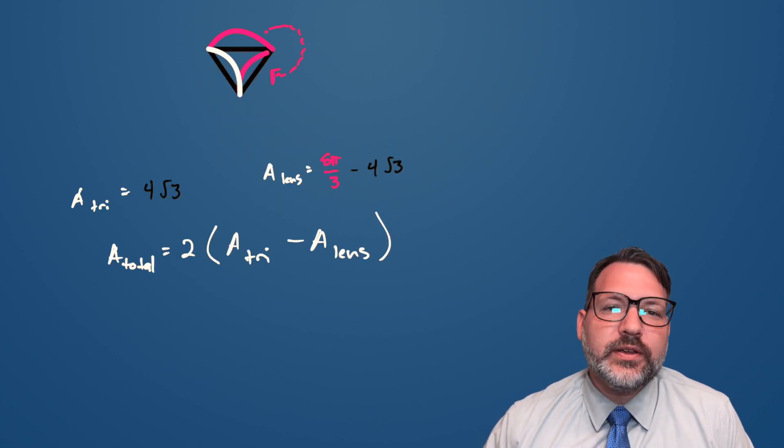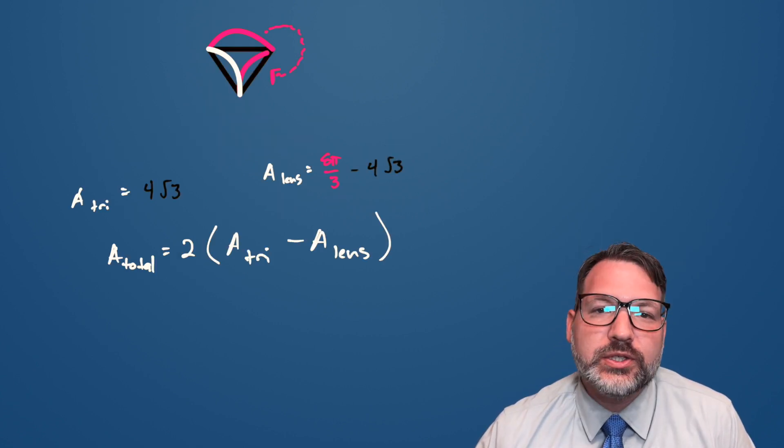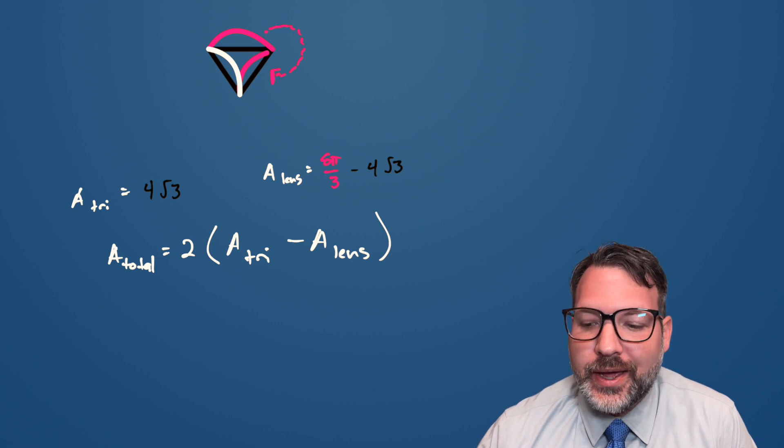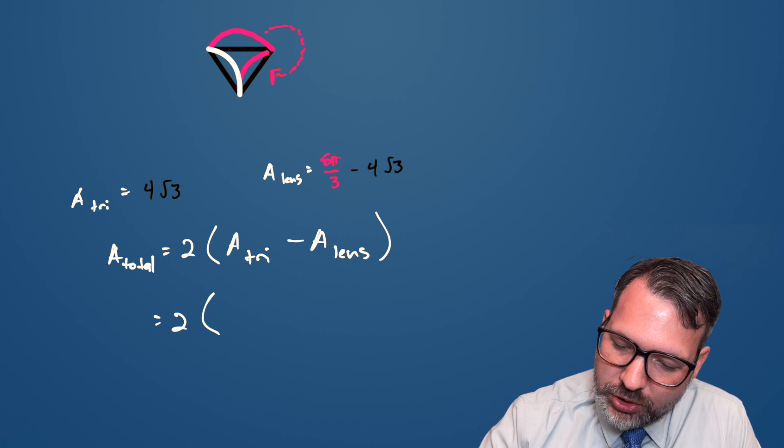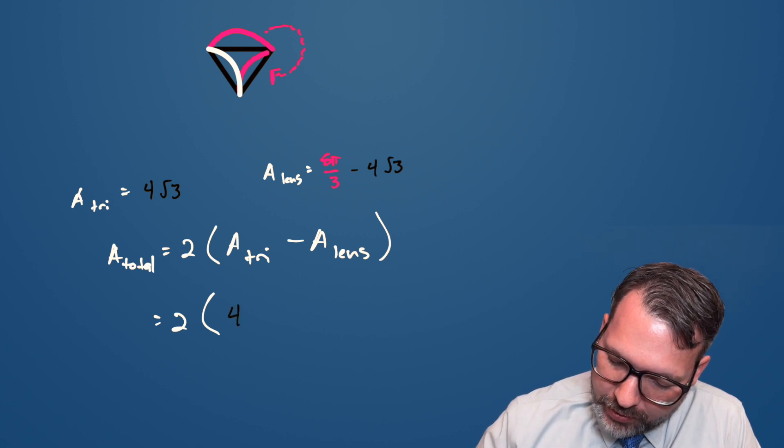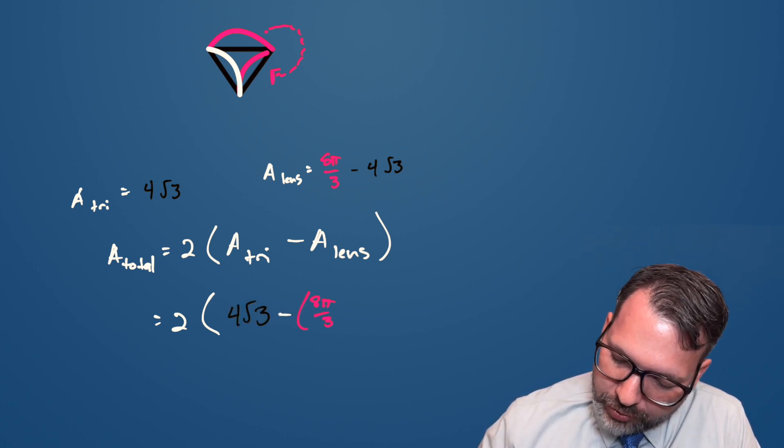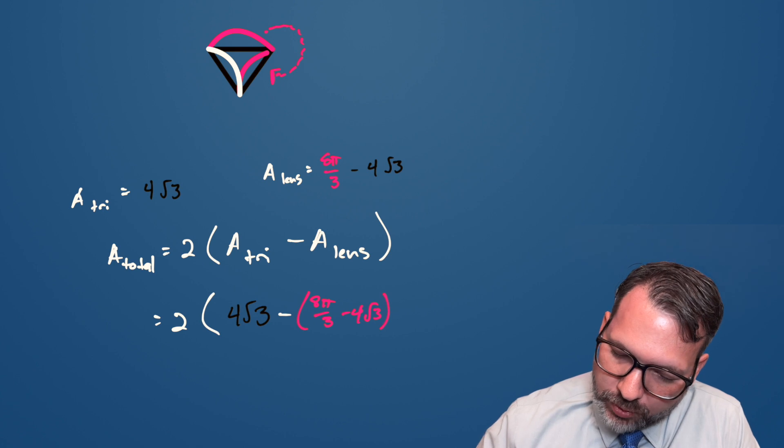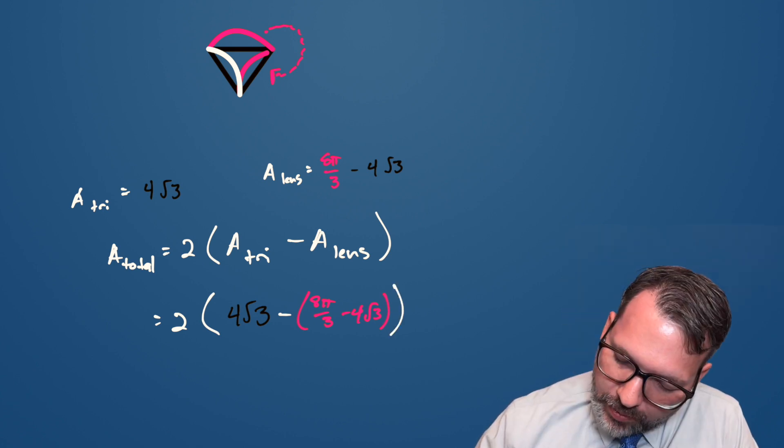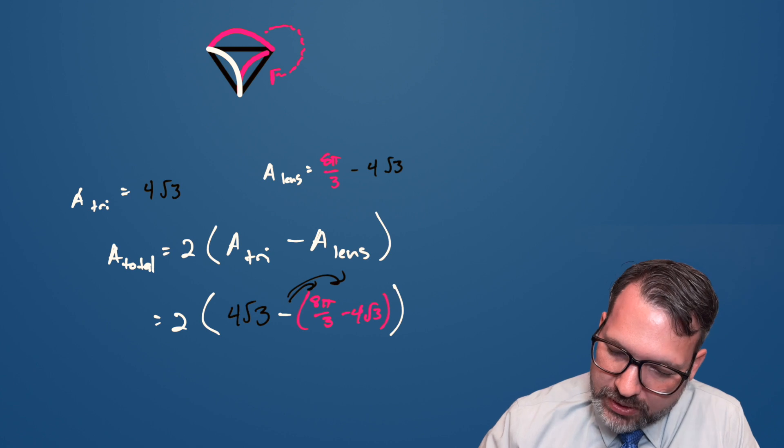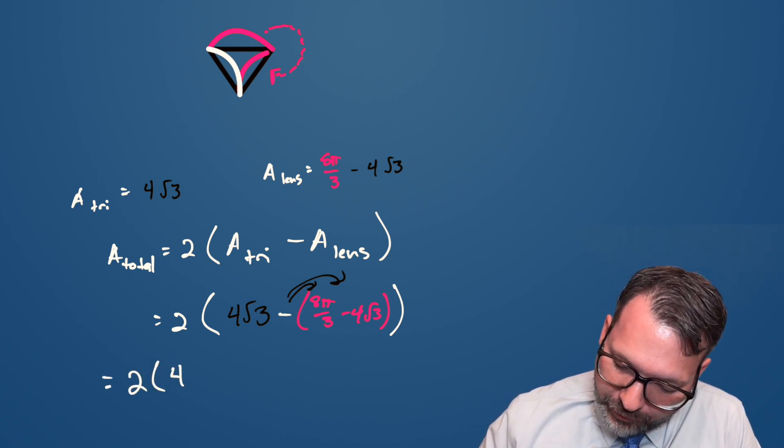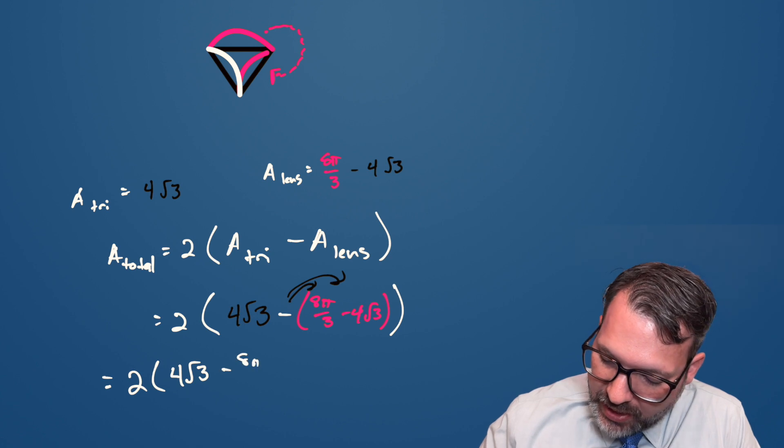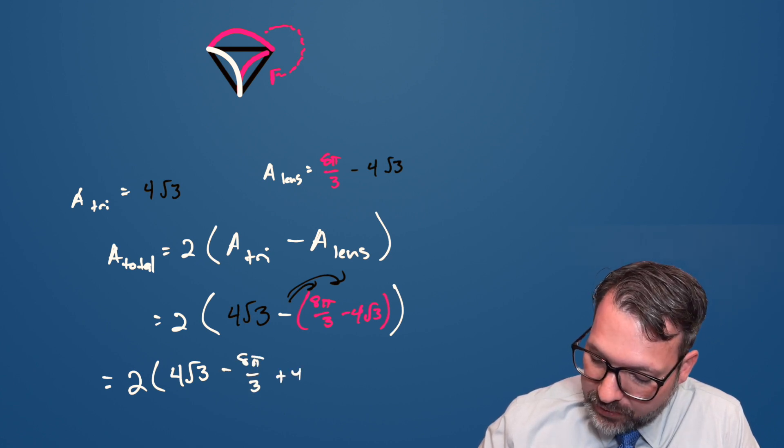Again, as we compensate for the ways that the different shapes fit together, what we want is twice the total area of that triangle minus that half lens, which means that what we're computing is 2 times 4√3 minus 8π over 3, which itself is subtracted away by 4√3 again. Keeping in mind that we basically need to distribute this negative sign, what we end up with is 2 times 4√3 minus 8π over 3 plus 4√3.